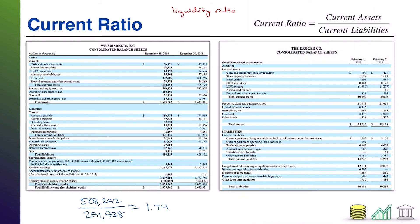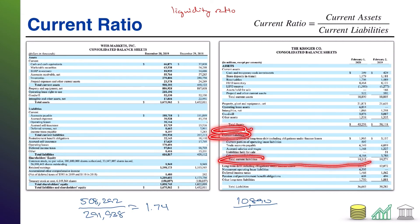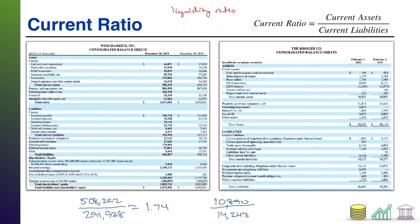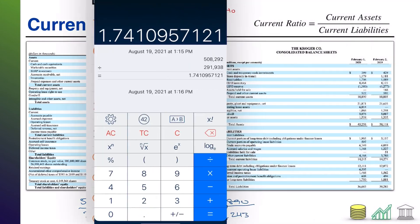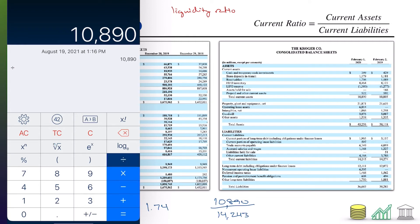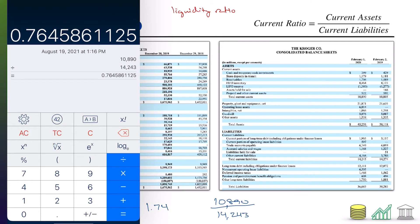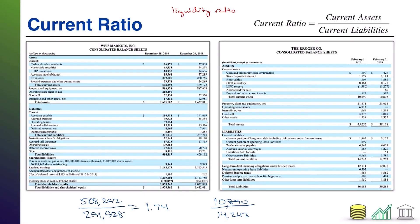Now let's check out Kroger. Again, we're going to look at current assets. Total current assets for Kroger comes out to 10,890. By the way, even though on the surface Kroger's number looks a lot smaller, Kroger's numbers are written in millions whereas Weiss Markets are written in thousands, so Kroger's number is actually bigger. Then pulling their current liabilities — total current liabilities is 14,243. So 10,890 divided by 14,243 comes out to approximately 0.77.